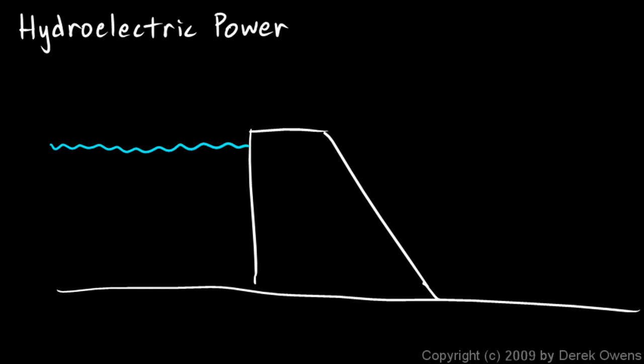And so you get the water backed up. From above, it might look something like this. Here's the river flowing. Say the river's flowing this way. You might build the dam in an arch shape like this.